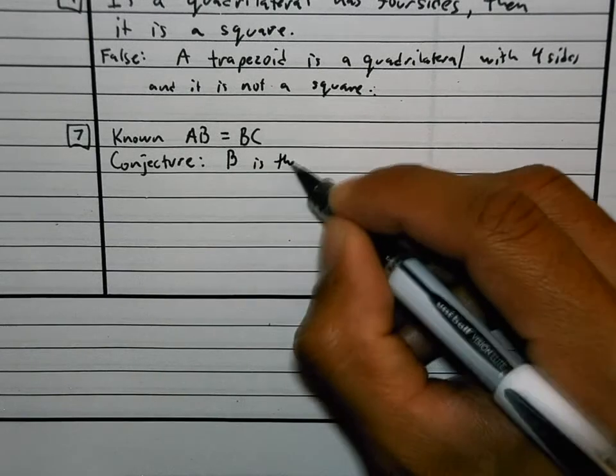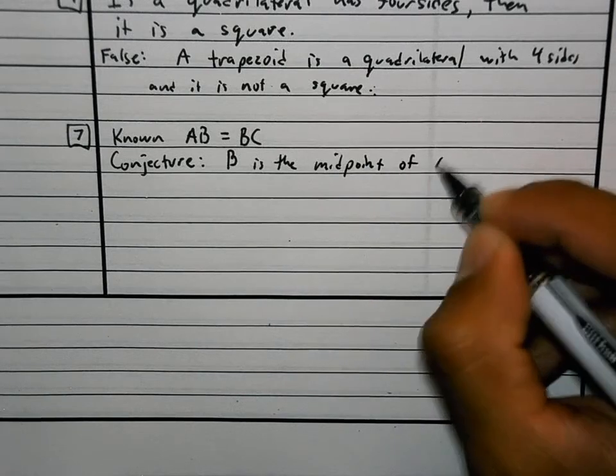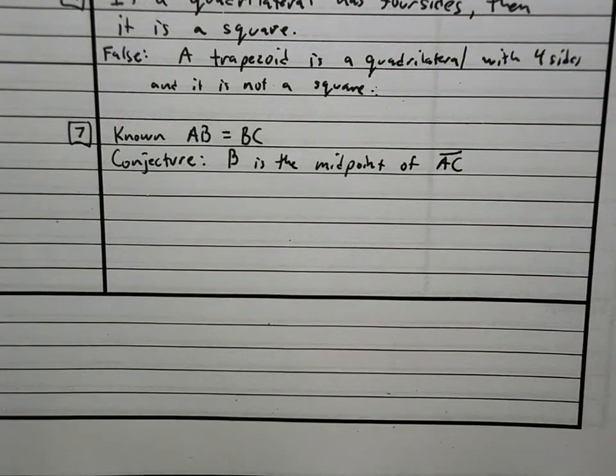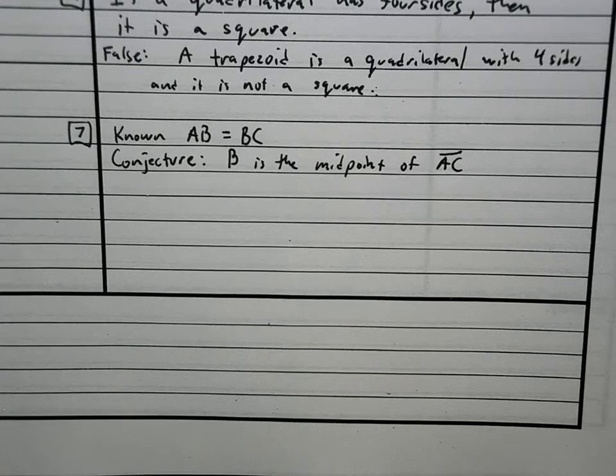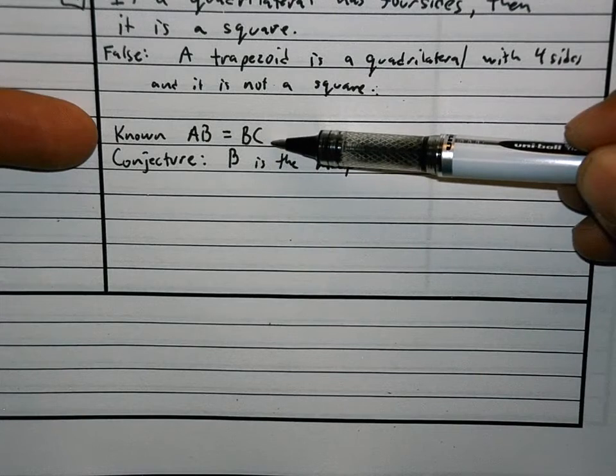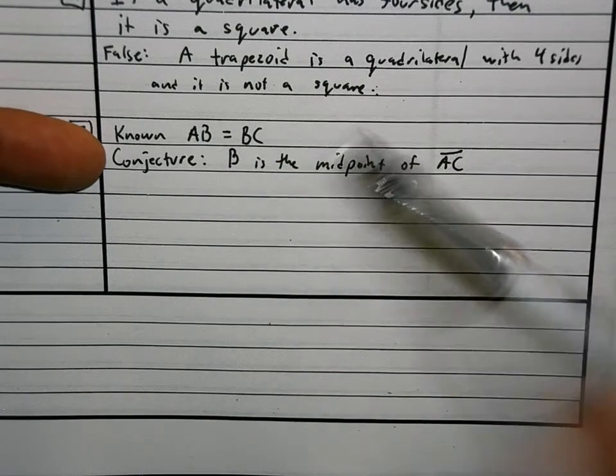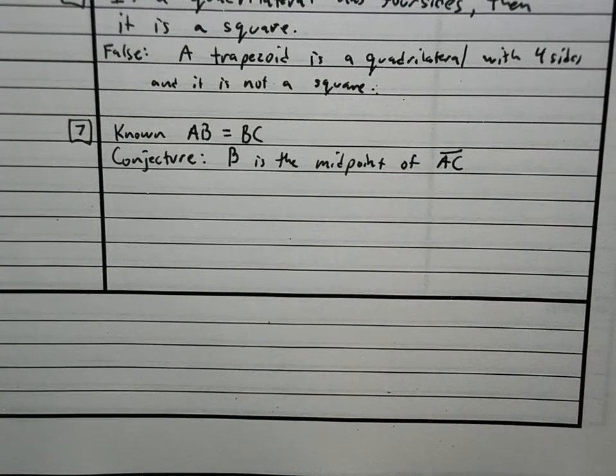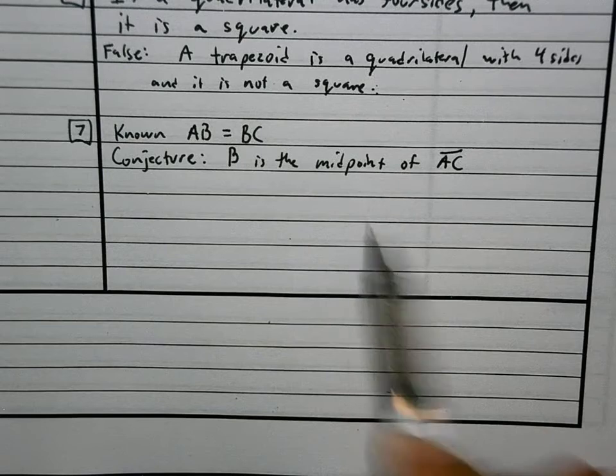B is the midpoint of AC. So in this particular case, we know that AB and BC are the same length. That is known. That's not part of the guess. We cannot refute this first statement. This first statement is true. The conjecture is that B has to be the midpoint of AC. So, in your mind, you might be thinking of a few things. AB is the same as BC. Does B have to be the midpoint of AC? Let's think about that.